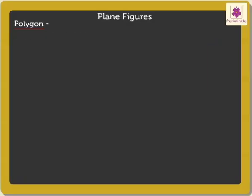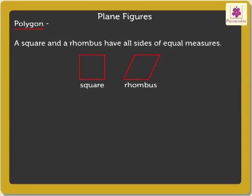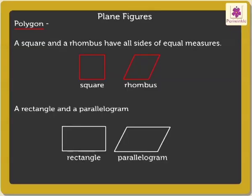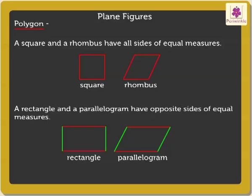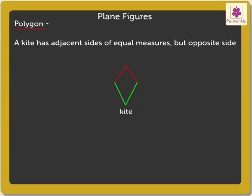Kids, do you know a square and a rhombus have all sides of equal measures? A rectangle and a parallelogram have opposite sides of equal measures. A kite has adjacent sides of equal measures but opposite sides of distinct measures.